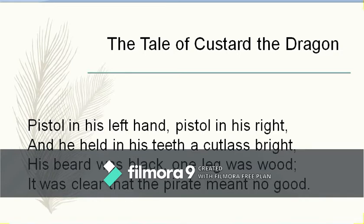Pistol in his left hand, pistol in his right hand, and he held in his teeth a cutlass bright. His beard was black, one leg was wood — it was clear that the pirate meant no good. The rhyme scheme: 'right' and 'bright' — A-A; 'wood' and 'good' — B-B. This is the description of the pirate who stood with pistols in hand, a black beard, and a wooden leg — he was there for some kind of destruction.